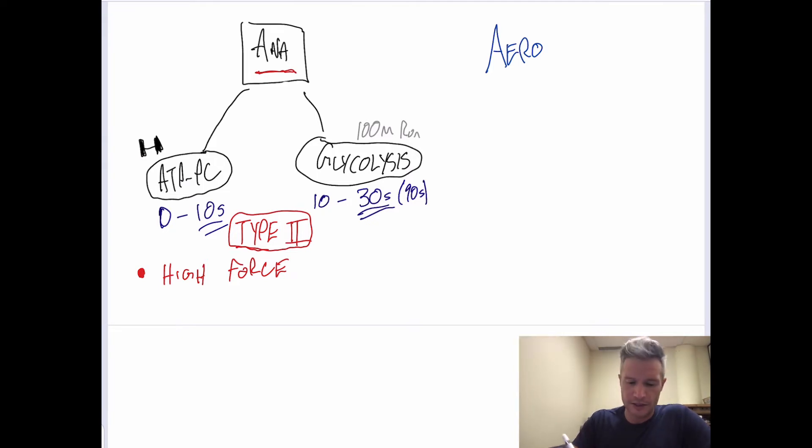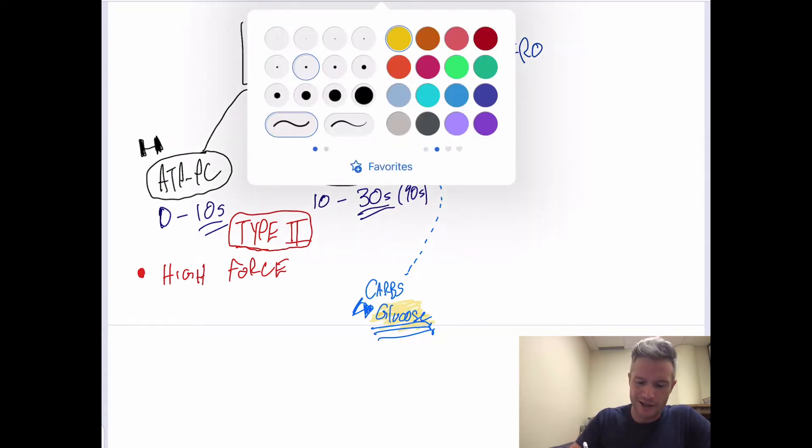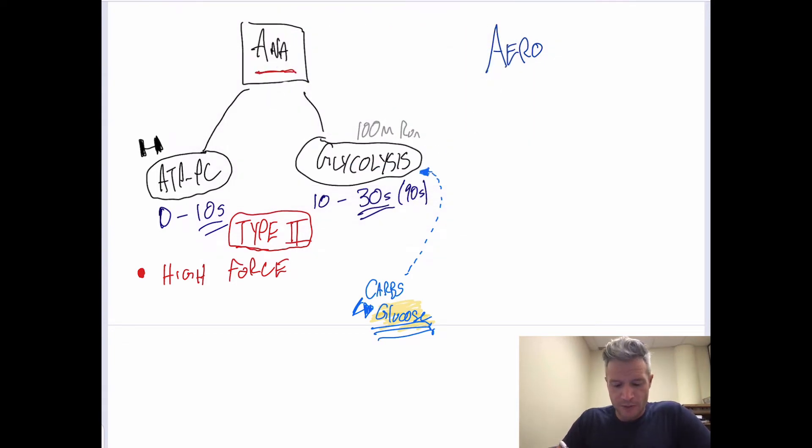When we're talking about high force in our skeletal muscles, we're talking about type 2 muscle fibers. So when we're thinking anaerobic, we're thinking type 2 muscle fibers. That gives us high force, short duration. They're also fatigable. One of the inputs that we put into glycolysis to help create energy is carbohydrates, in particular sugars, or most specifically glucose.